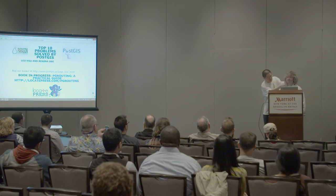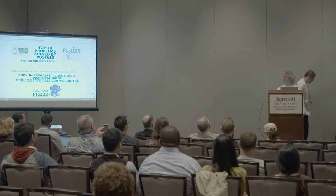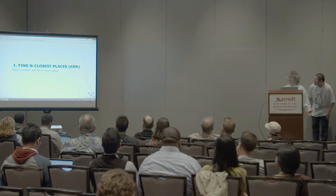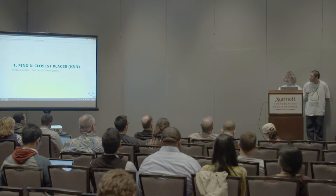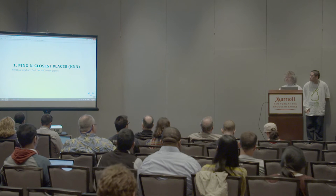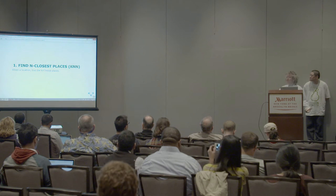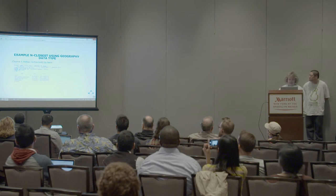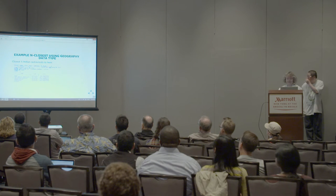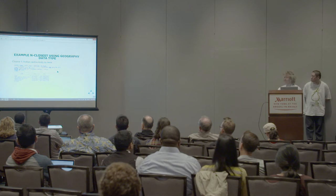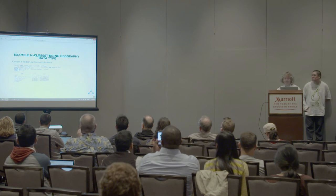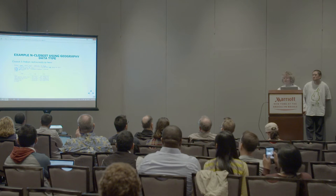We're going to cover problems that you'll run into even if you're not a GIS person or a spatial person. The first common problem that people want to answer, now that we have all these GPS devices like your phone, browser, and car, is: if you're in a location, what are the N closest things to you? The query you'd use looks something like this. The key part is this operator called a KNN distance operator, which will return the distance between any two geometries or geographies. Geographies is basically just a round earth model versus a flat surface model.